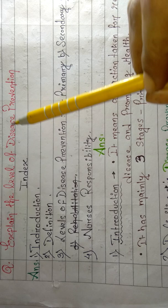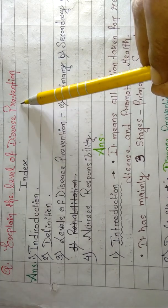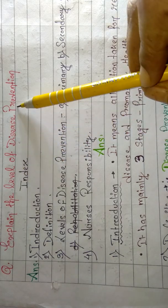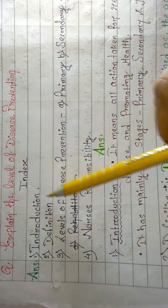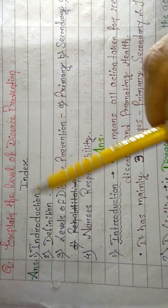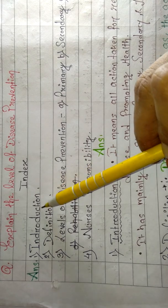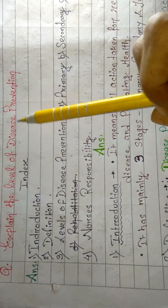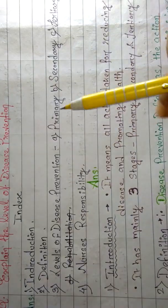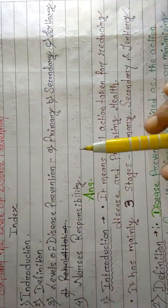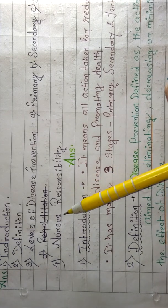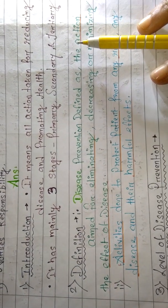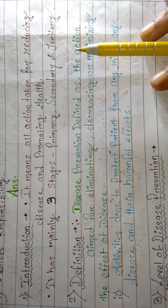Now let's move to the next topic: levels of disease prevention. This is also a very important question. When answering this question, make an index with: introduction of disease prevention, definition of disease prevention, the three levels — primary, secondary, and tertiary — and the nurse's responsibility.